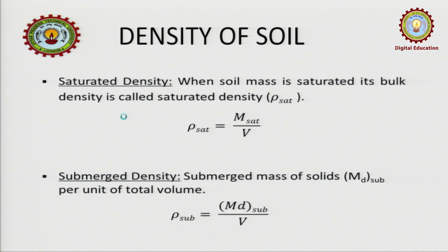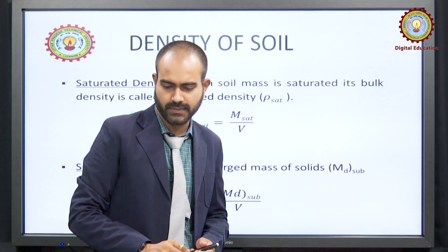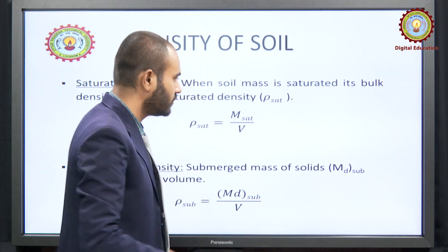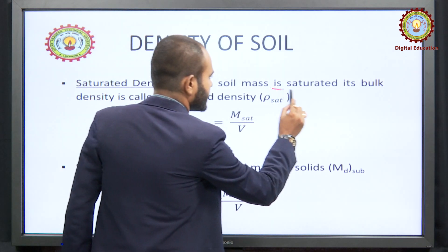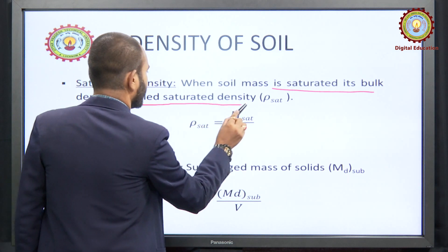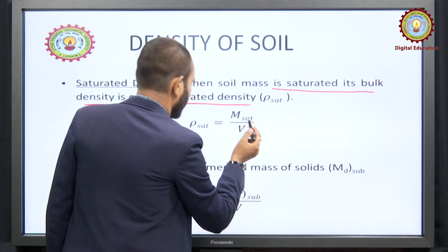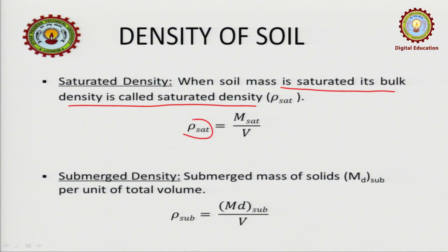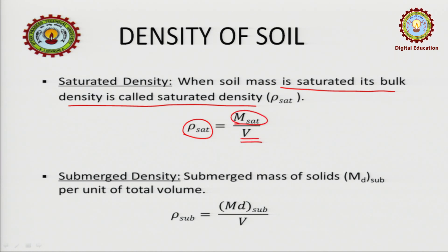Saturated density — what is saturated density? It is the density when the soil is saturated. When the soil mass is saturated, its bulk density is known as the saturated density, represented by rho-saturated. It will be m-saturated upon total volume.